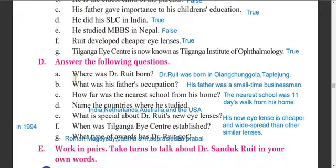Now, answer the following questions. A - where was Dr. Rohit born? Dr. Rohit was born in Olangjungola, a remote part of the world. B - what is his father's occupation? His father was a small-time businessman. C - how far was the nearest school from his home? The nearest school from his home was 11 days' walk from his home.